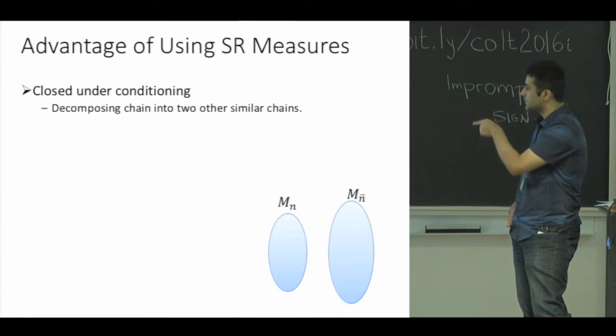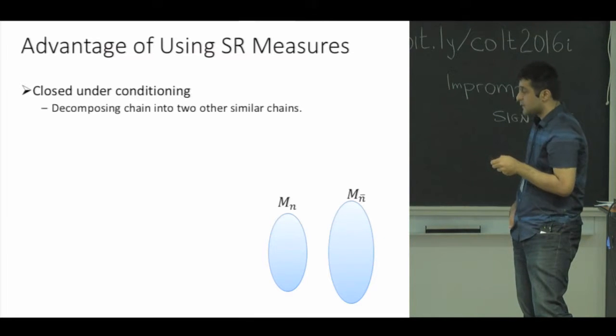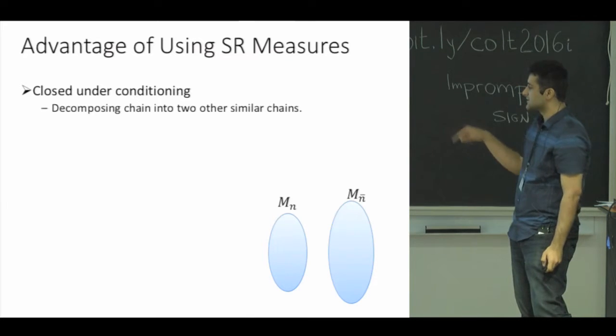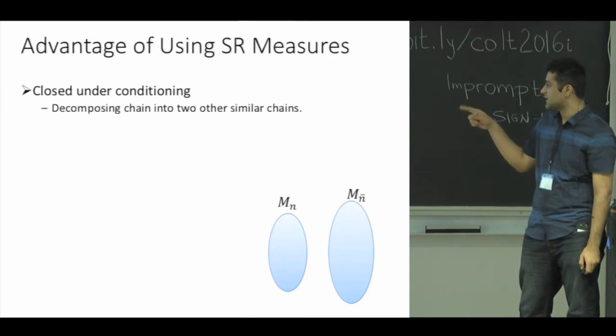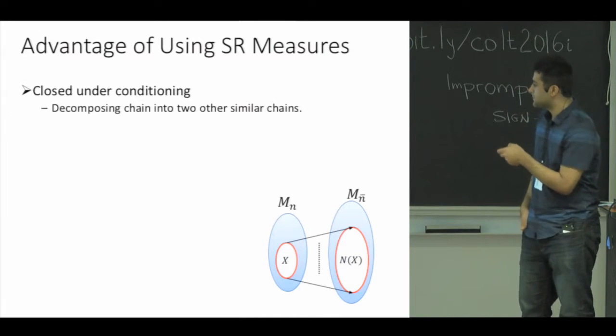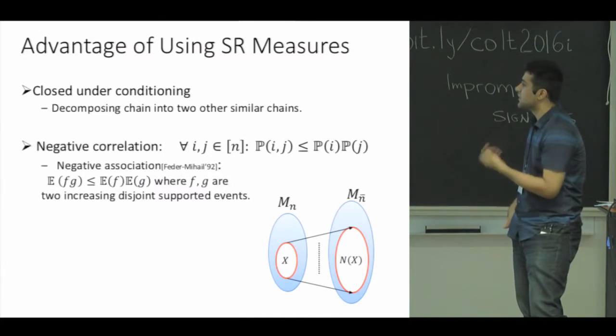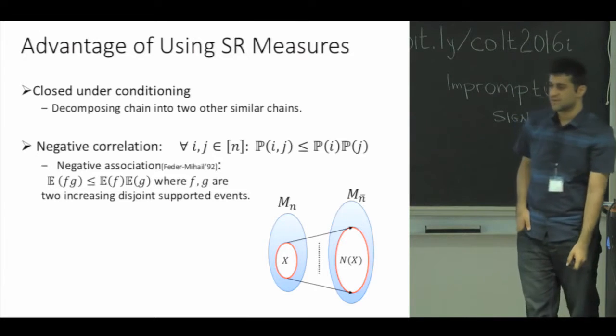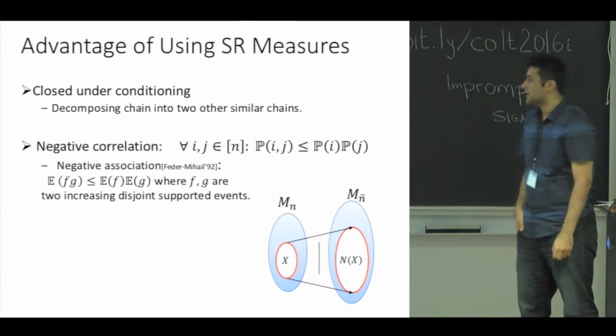To complete the argument, we also need to say that these two parts are well connected, in the sense that each subset of any of them is expanding in the other one. This can be concluded from the negative correlation property of SR measures.